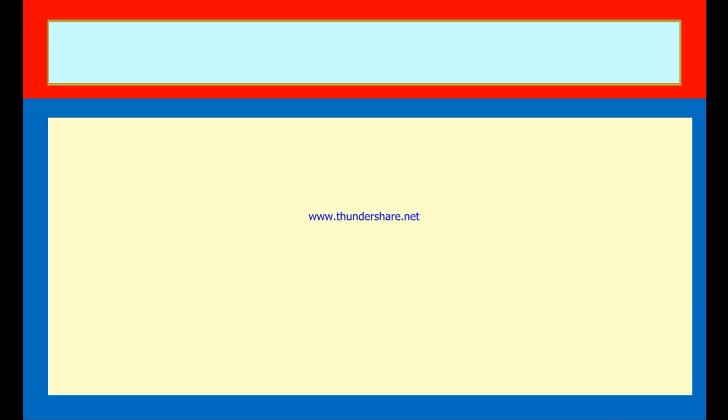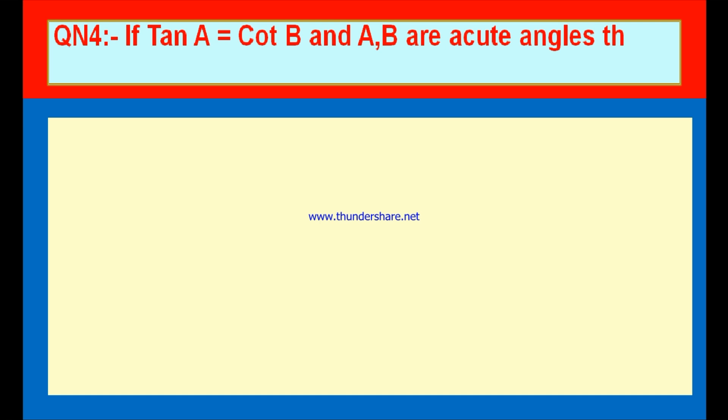Here is question number 4. If tan A is equal to cot B, and A and B are acute angles, then prove that A plus B is equal to 90 degrees. If tan A is equal to cot B and A, B are acute angles, then prove that A plus B is equal to 90 degrees.